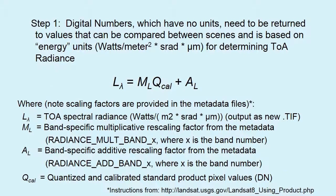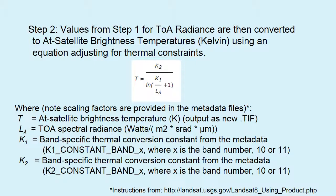Here is the step one equation for TIRS. Again, your inputs are from your metadata files and you are using software — in this case ArcGIS 10.3 — to input the various variables and get an output TIFF. That output is then used in the step two equation to get the at-satellite brightness temperatures in degrees Kelvin. Your metadata file comes with all the data you need to use in this equation.